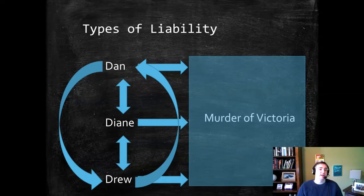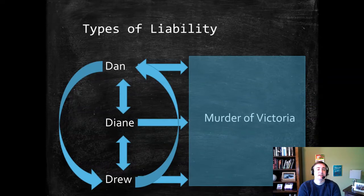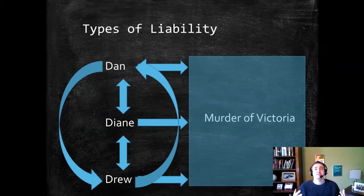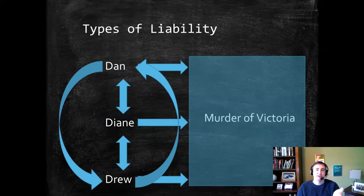So instead of just having liability of Dan, Diane, and Drew individually, we can connect them through accomplice liability. Diane might be liable under certain circumstances — which I'll define — for the actions of Dan or Drew. Dan can be liable for the actions of Diane and Drew, and so on. There are many different ways a person can be liable for the murder of Victoria among these three people. This is important because in any criminal enterprise, even small ones, there is coordination of activity among multiple criminals. Treating them as islands would miss their potential liability for taking part in a larger crime.